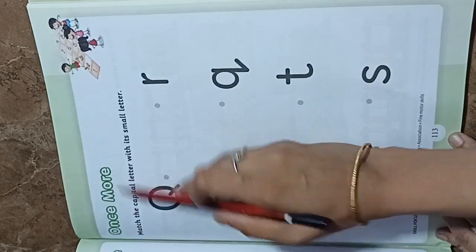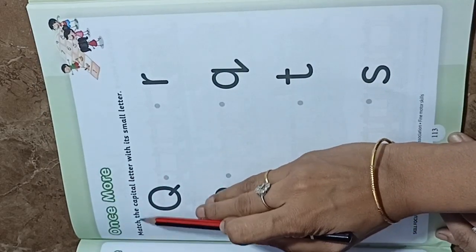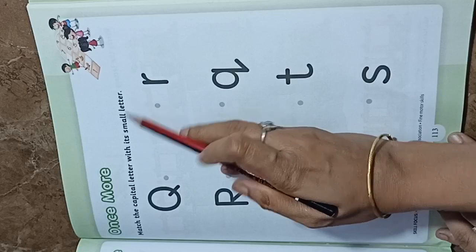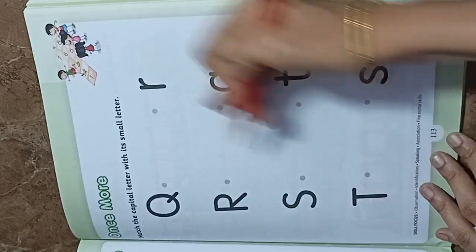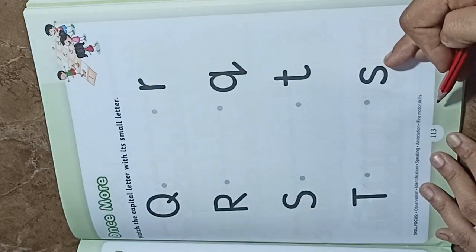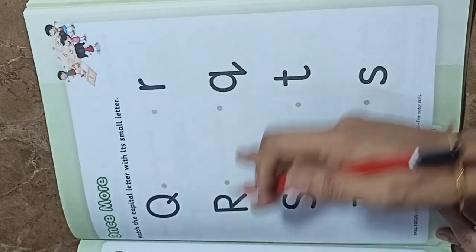Our topic today is one small. Now, what do we call one small? Match the capital letter with a small letter. One side we have a capital letter and one side we have a small letter.